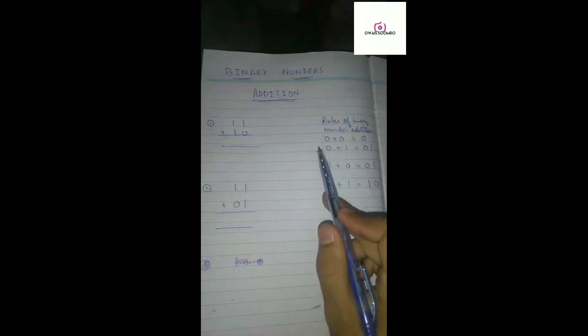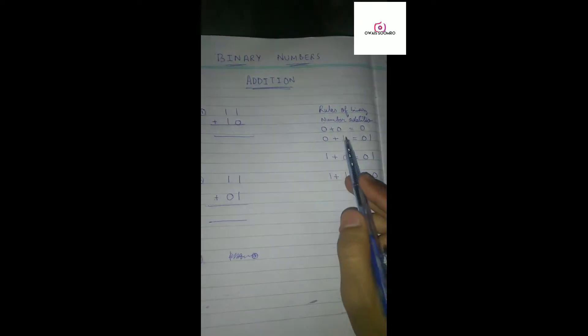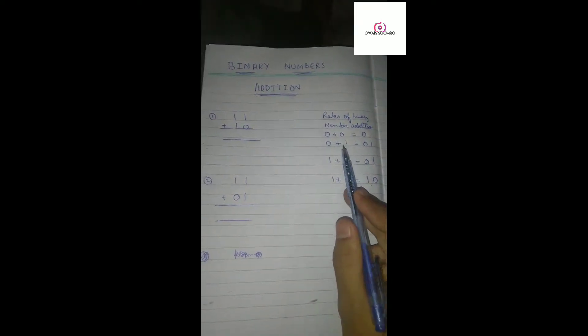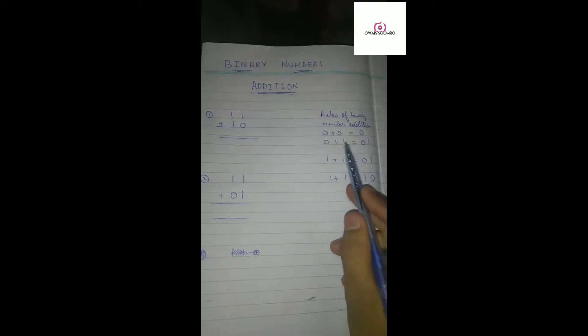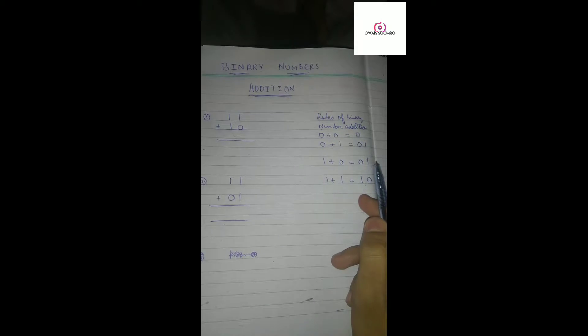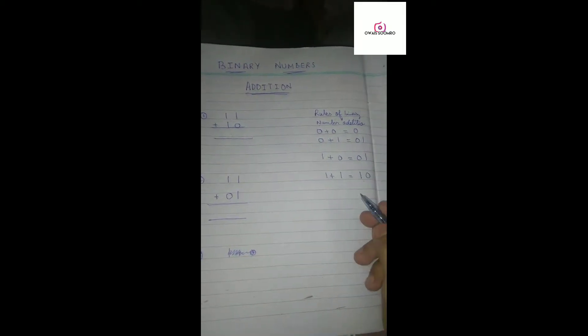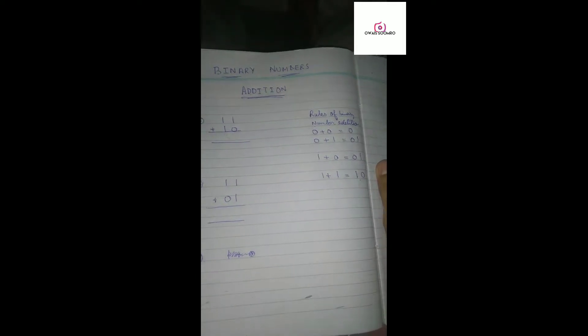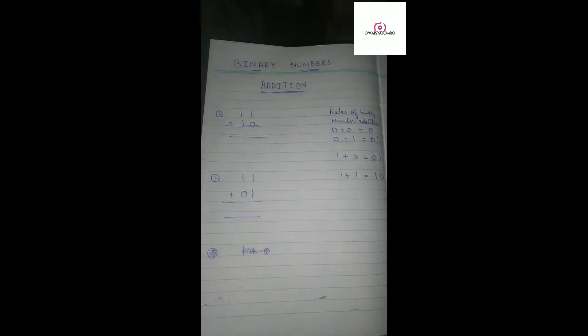The topic is binary number addition. First of all, you should know about the rules of binary number addition. Some of the rules are written here. You can see: 0 plus 0 equals 0, 0 plus 1 equals 01, 1 plus 0 equals 01, and in binary number addition, 1 plus 1 equals 10. Here it is not 2, it is 10. So let's come towards our question.